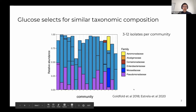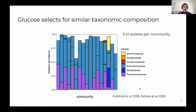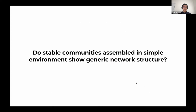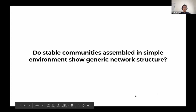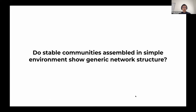We can take advantage of this by isolating the strains from these communities. We know these communities coexist by themselves, and we can take apart the community and isolate each strain. This puts us in a good position to ask: do stable communities that show similar taxonomic composition also show a generic network structure?